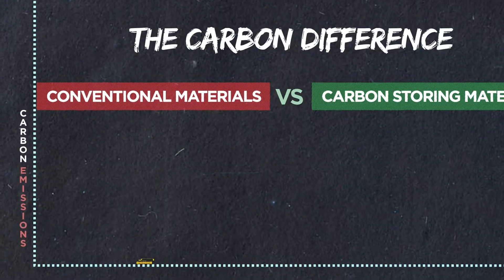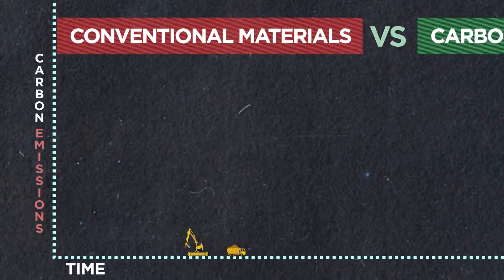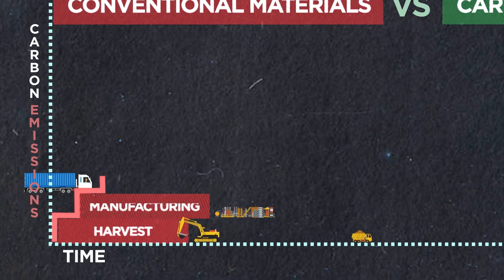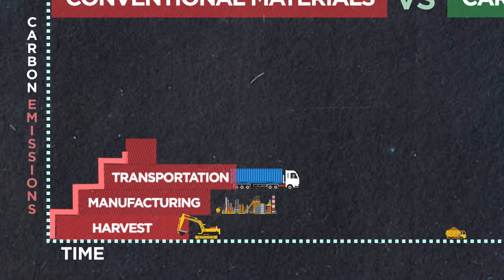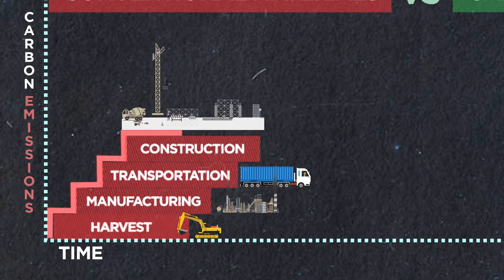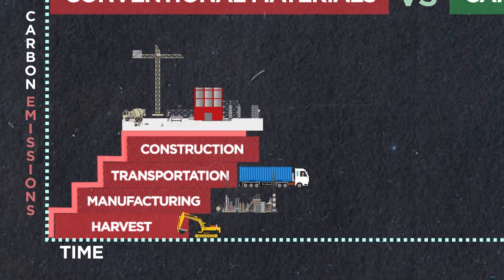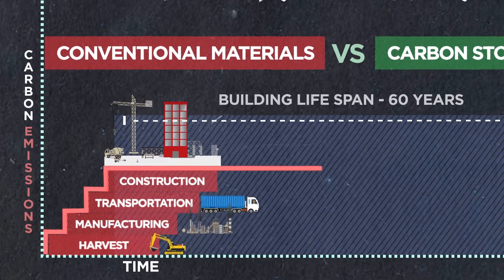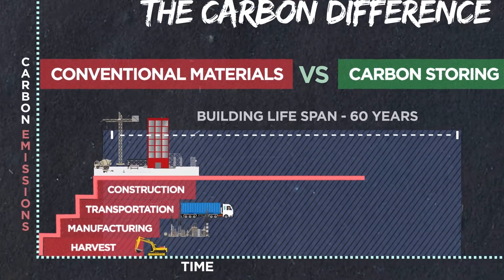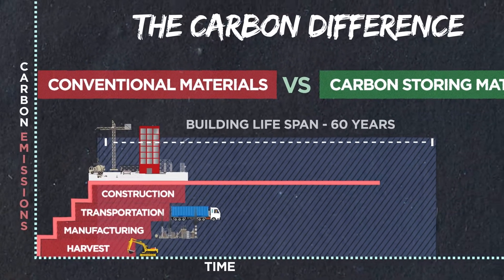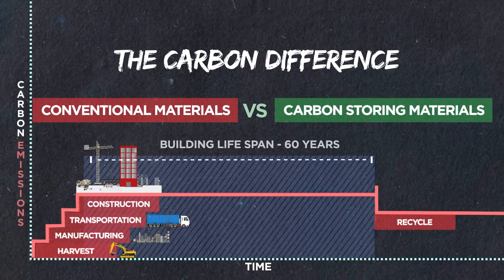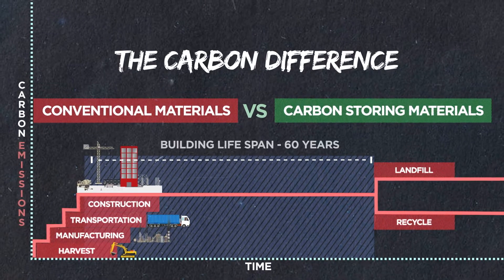They all go through a similar process at some point. We harvest the raw material and take it to a factory for production. It gets transferred to the site, then we use the material to make the building. Let's say for argument's sake the building lasts for 60 years, and then at the end of its lifetime the material is recycled or it goes to landfill.